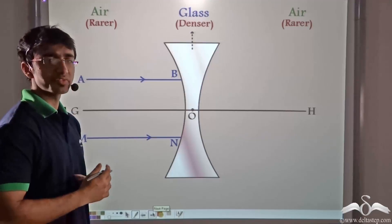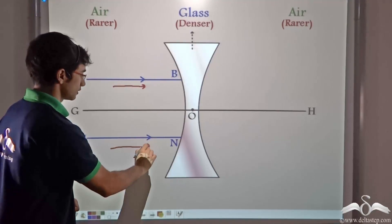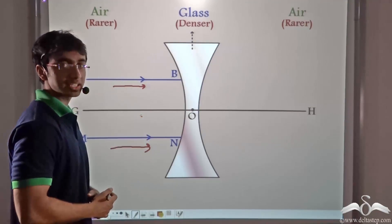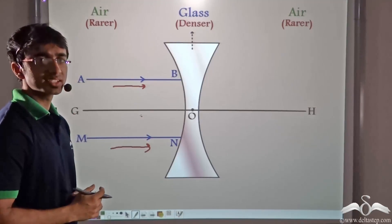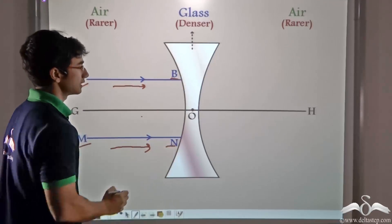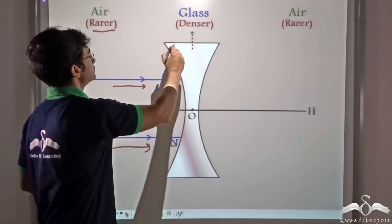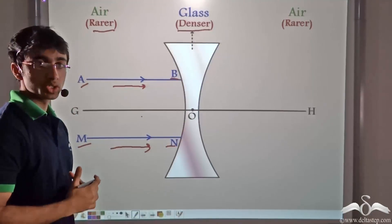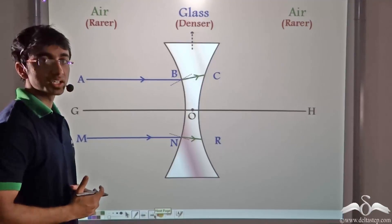Since the Sun is an object that is very far away, the rays of light coming from it are parallel to one another. The concave lens is also kept in such a way so that the principal axis of the concave lens, GH, is parallel to the incident rays. Now here we consider two incident rays AB and MN. These two rays are incident on the air-glass interface — that is, from a rarer medium to a denser medium. Since there is a change in medium, these rays will undergo refraction.